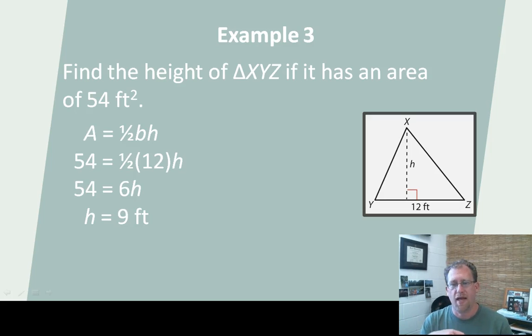Here we have a triangle, x, y, z. And we're told it's base length and we're told it's area, but we're not told it's height. So here you're supposed to determine the height based on the area and the base length. Remember, area is one half times base times height for a triangle. So if I've been told that the area is 54 square feet and that the base is 12 feet, I can just solve for h.